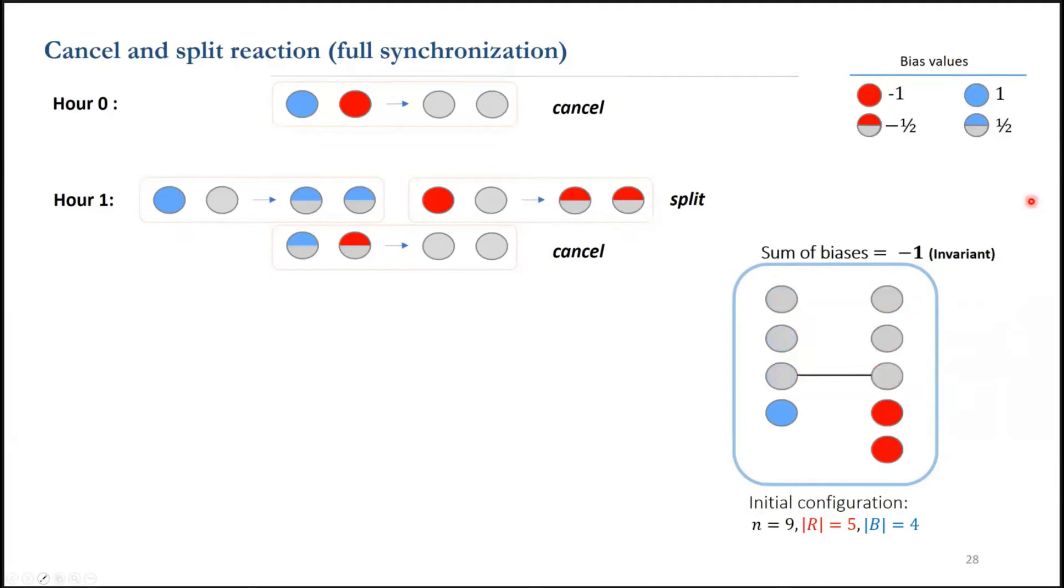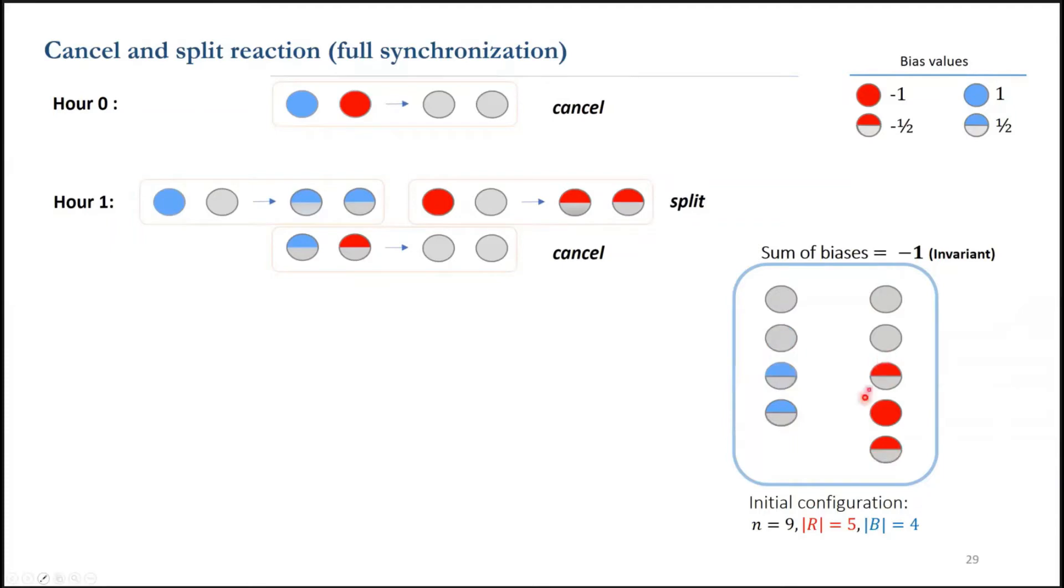Now a cancel happens when two agents with the sum of the biases equal to 0 interact, and split happens if an agent interact with 0, and they give half of their bias to a neutral agent.